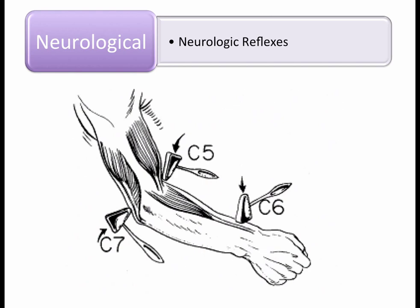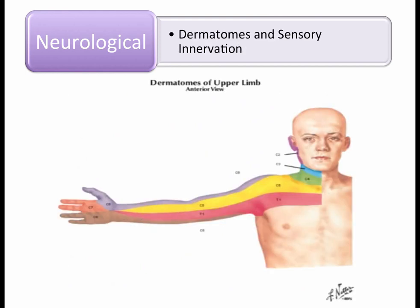When assessing reflexes, the bicep tests C5, brachioradialis tests C6, and triceps tests C7. For dermatomes: C5 covers the shoulder and inner arm, C6 the thumb, C7 the second and third fingers, C8 the pinky and inside of the arm, and T1 up near the axilla. Knowing these distributions guides sensory assessment of the upper extremity.